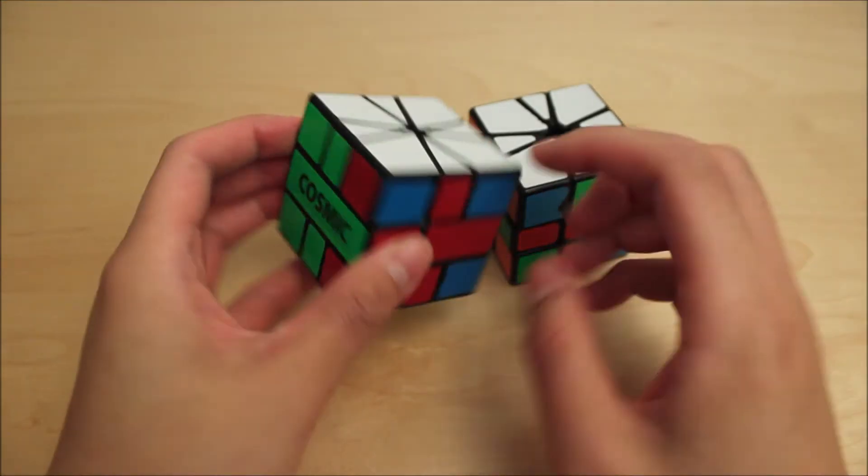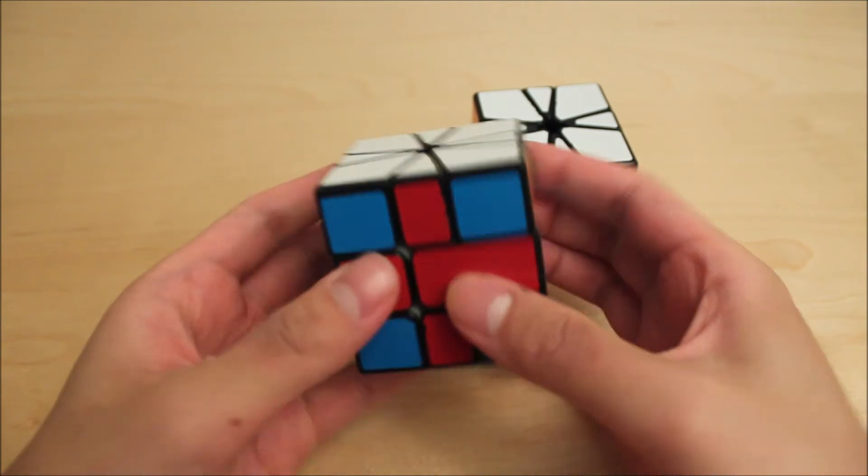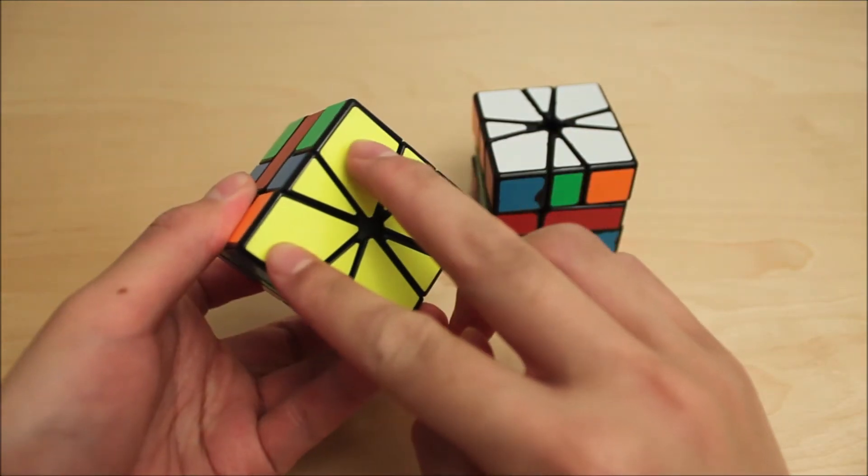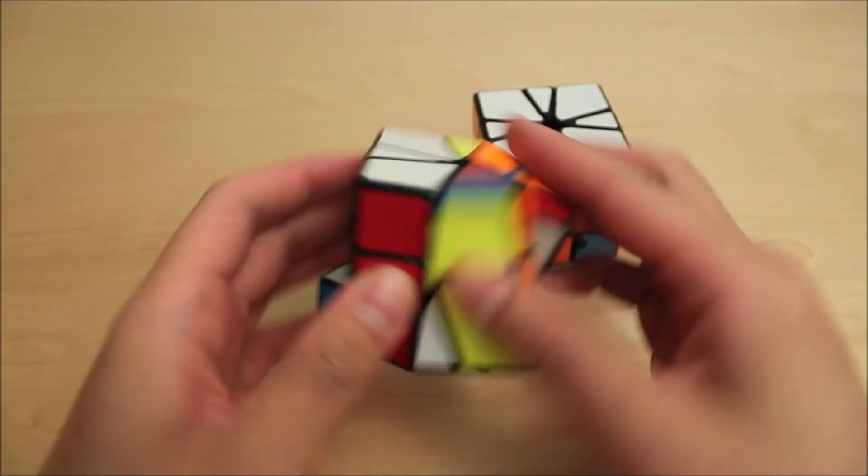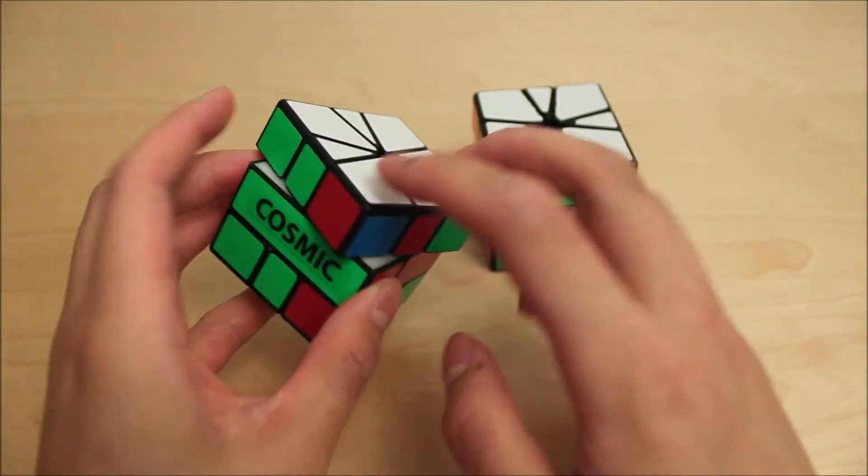You can also use PJ to solve A-perms. So here's an A-perm. We can switch these two corners, and these two corners, and these two, and these two.